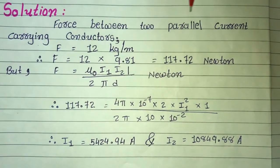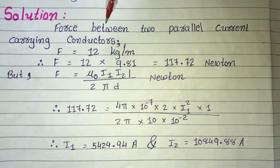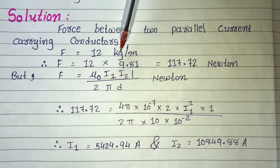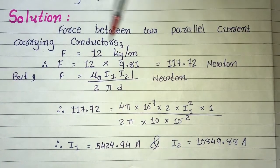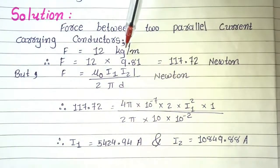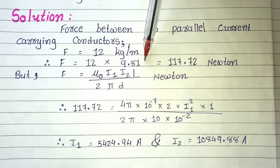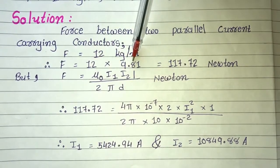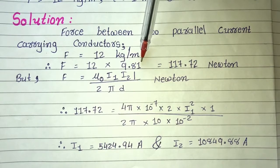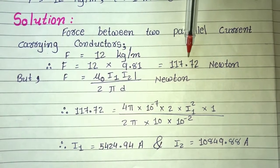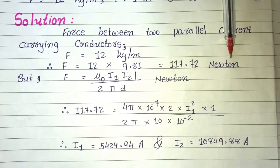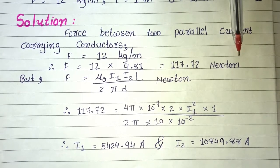So, F is equal to 12 kg per meter. F is equal to 12 into 9.81. You multiply 12 into 9.81, what do you get? 117.72 Newton. Force, so the unit will be Newton.